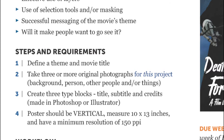What are the steps you're going to go through? This is going to be a relatively quick project, just a couple of weeks. Your first step is to find the theme and the movie title. The next step is to figure out what your layout is going to be — what are the elements going to be? That will define what pictures you need to shoot. Step two is to take three original photographs — you'll probably take more than that, but you're going to use three: for the background, for a person or people, or things.